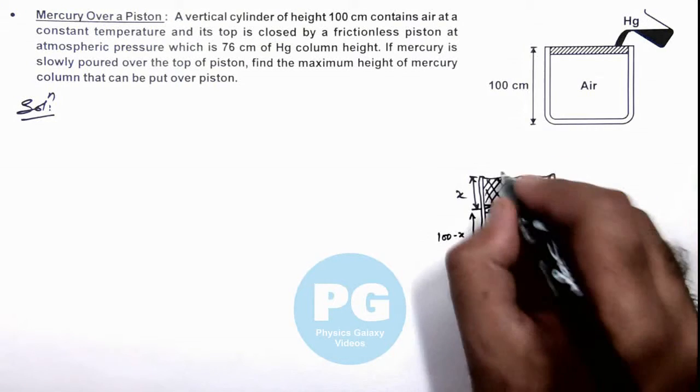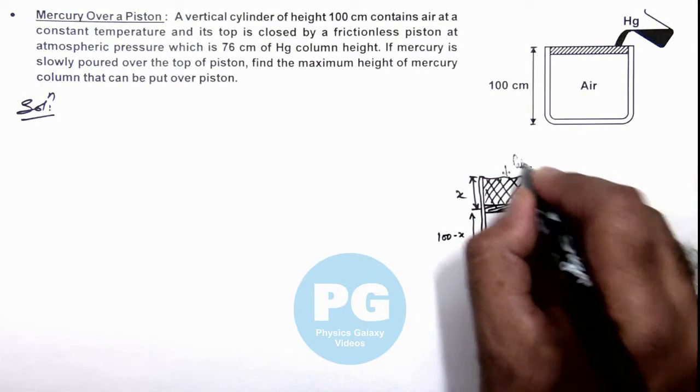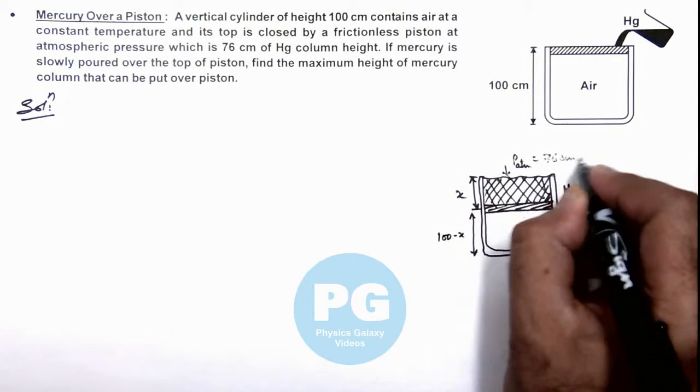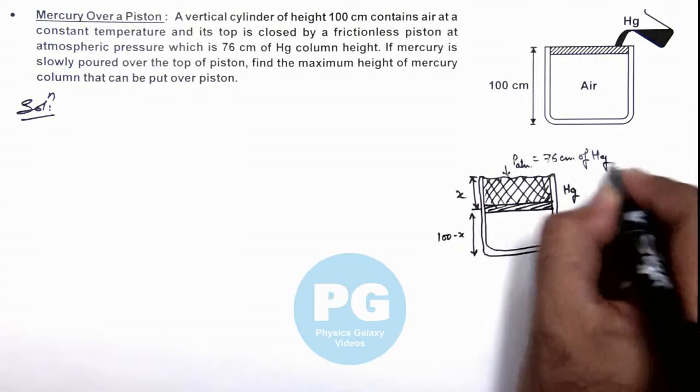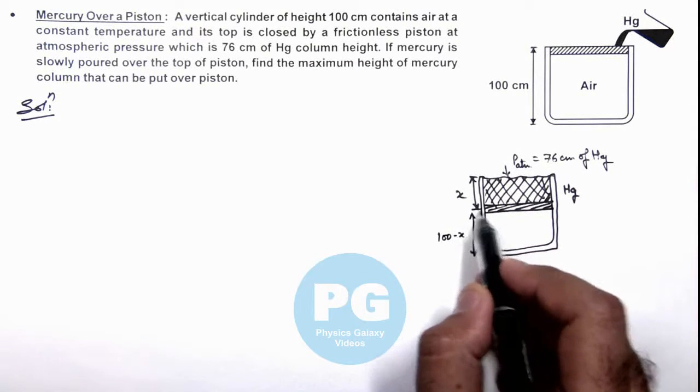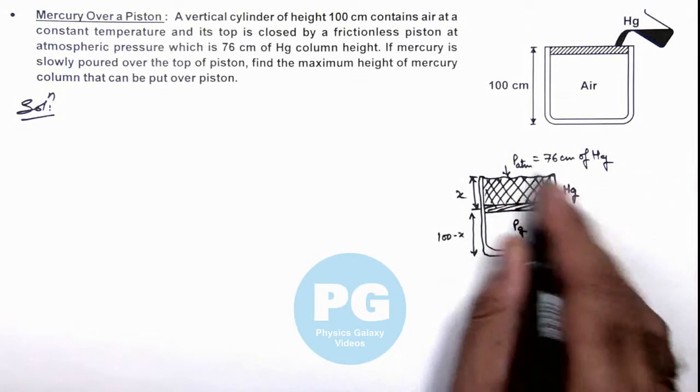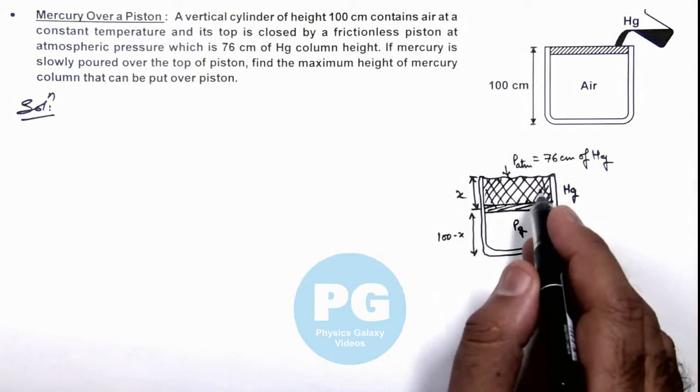We already know P atmospheric is applied over it, and this P atmospheric is 76 centimeters of mercury, and this is x centimeters of mercury. So here if gas pressure is P_g, then it will be balancing the overall weight of mercury and atmospheric pressure.